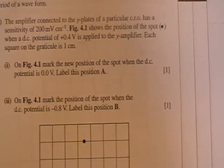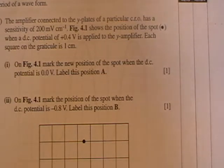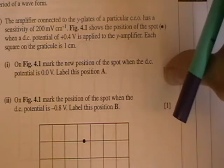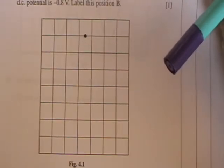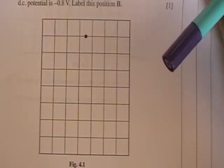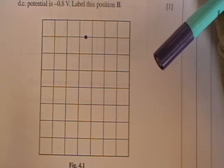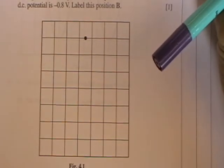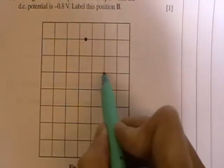The amplifier connected to the Y plates of a particular CRO has a sensitivity of 200 millivolts per centimeter. Figure 4.1 shows the position of the spot when a DC potential of 0.4 volts is applied to the Y amplifier. Each square on the graticule is one centimeter, so each of these is one centimeter.